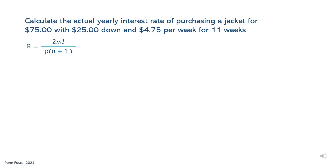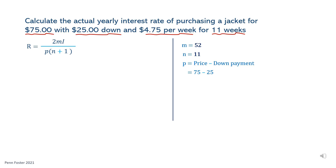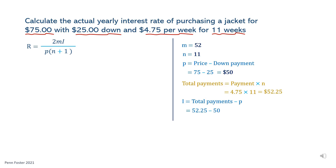Let's look at a different example. Calculate the actual yearly interest rate of purchasing a jacket for $75 with $25 down and $4.75 per week for 11 weeks. Here, M equals 52 since payments are weekly, and N equals 11. The borrowed amount P is $75 minus the down payment $25, so P equals $50. For I, let's first calculate the total payments. Multiply the amount of each weekly payment, $4.75, times N, which is 11. The total payments are $52.25. Subtract the total payments minus P to find I, the amount of interest. I equals $52.25 minus $50, so I is $2.25.